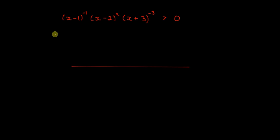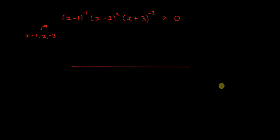This expression equals 0 only when x equals 1, 2, or negative 3. We cannot include points where the expression is undefined, so we mark minus 3, 1, and 2 on the number line.